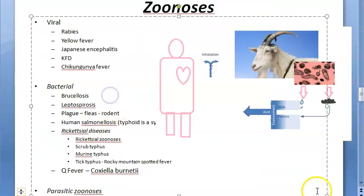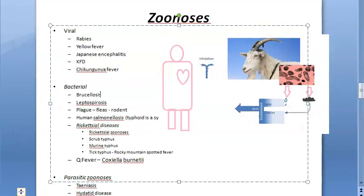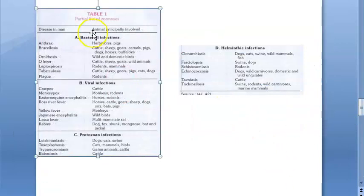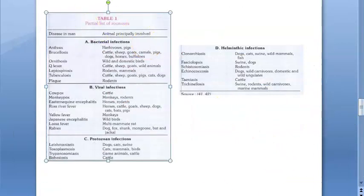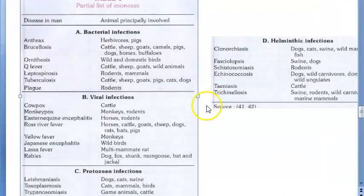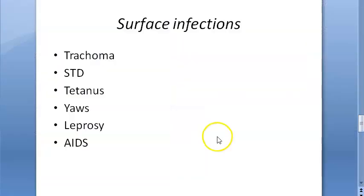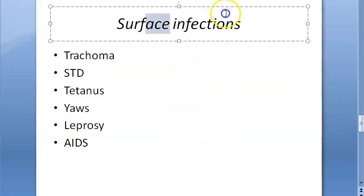There is a table of zoonosis in the textbook covering bacterial, viral, protozoan, and helminthic zoonoses, with the affected animals mentioned. You can refer to that if you want.